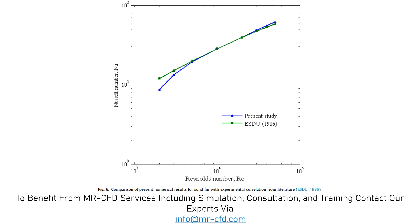We have extracted figure 6 of the paper, which shows the Nusselt number data for different Reynolds numbers, and we are going to validate this graph.